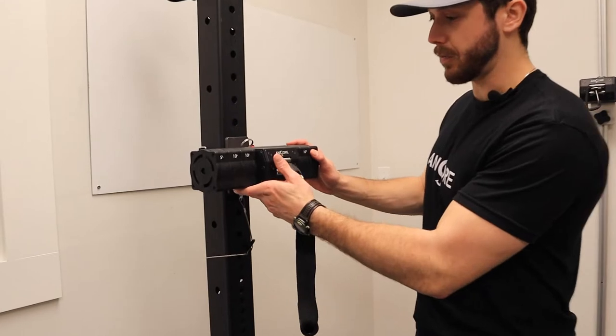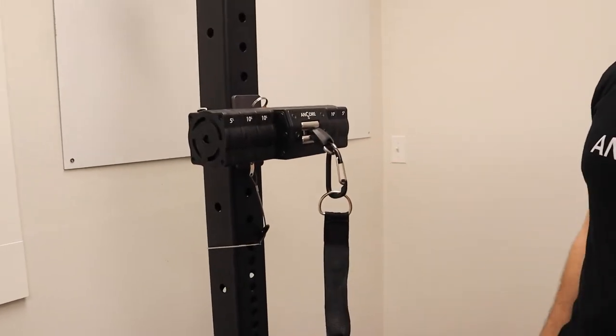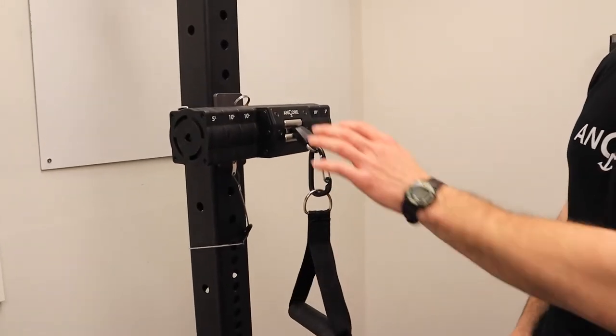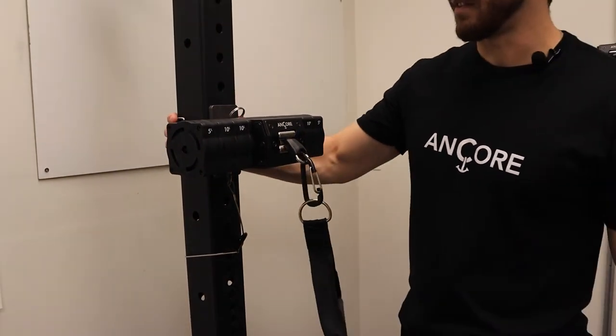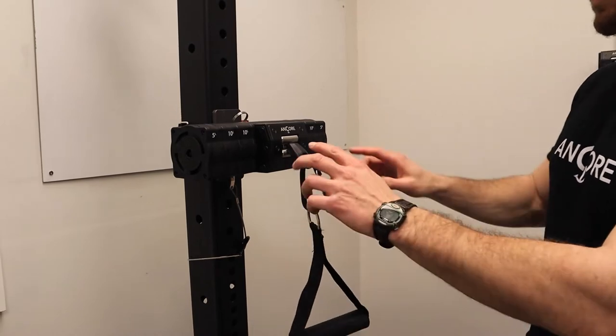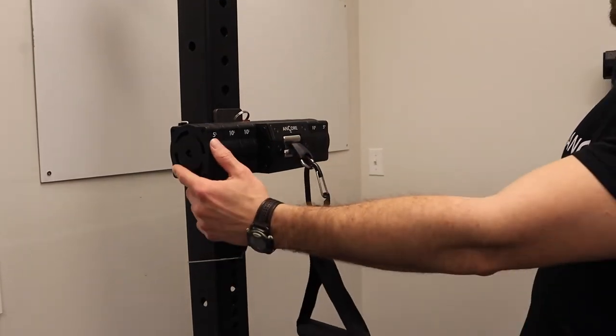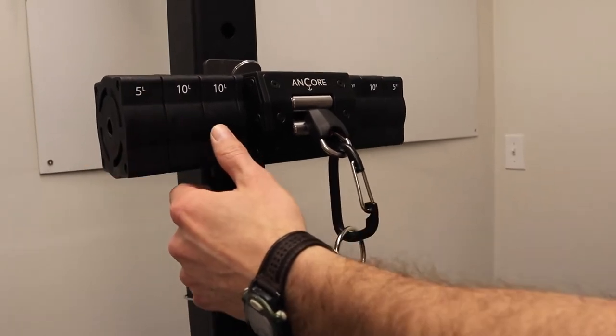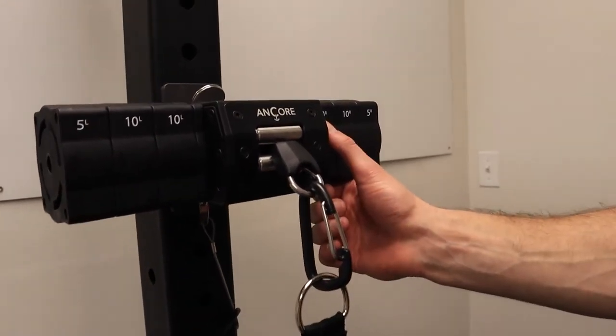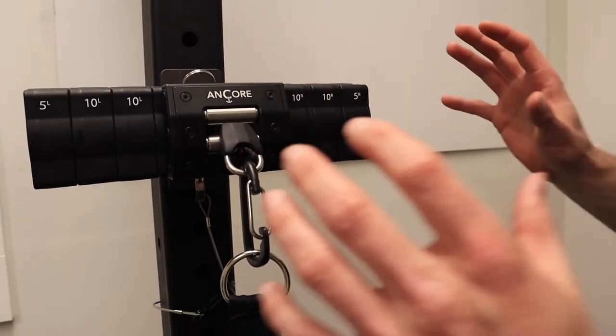Here we've got the full product loaded. This is what comes in a standard kit. You get your base unit, a handle attachment, and the universal strap mount with six resistance plates. We've got fives on the left, L denoting that left side, a couple tens, two tens on the right, and a five. So this is your standard package.